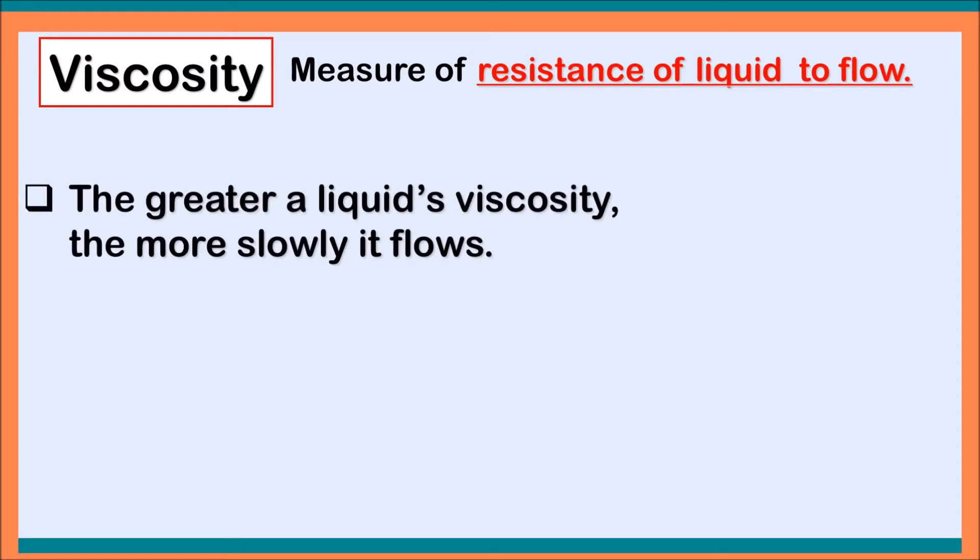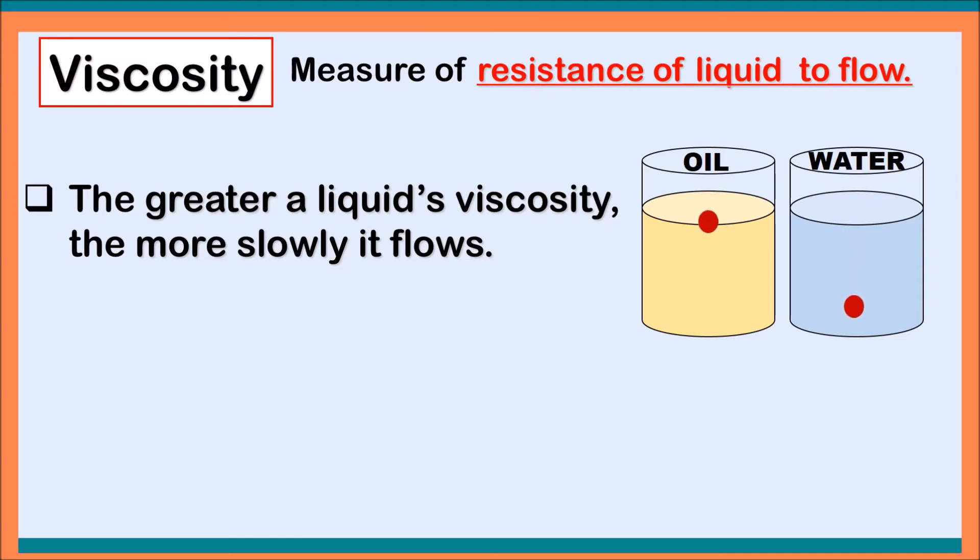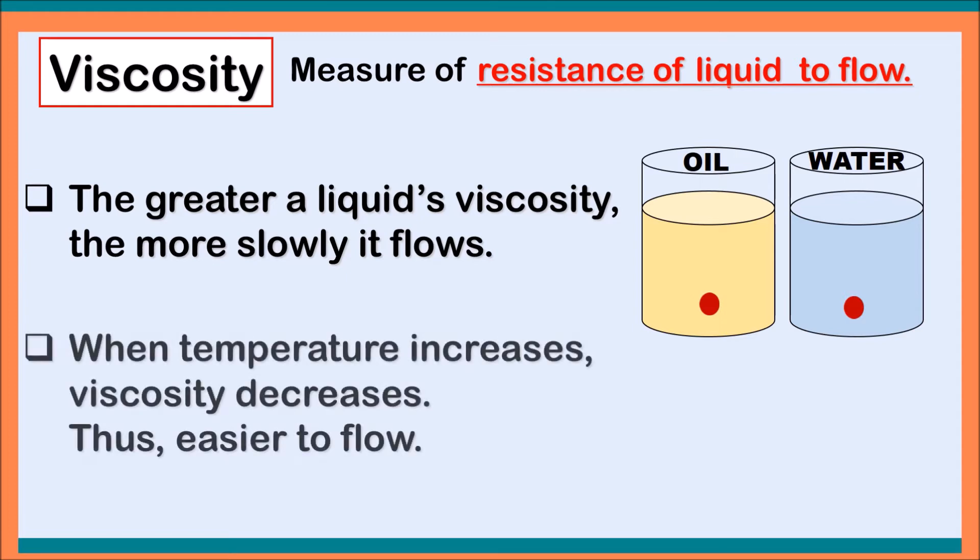Next, viscosity. Viscosity is a measure of resistance of liquid to flow. The greater a liquid's viscosity, the more slowly it flows. Let's look at an example. As we all know, oil is more viscous than water, thus when you place a marble in oil it falls down slowly compared to in water.